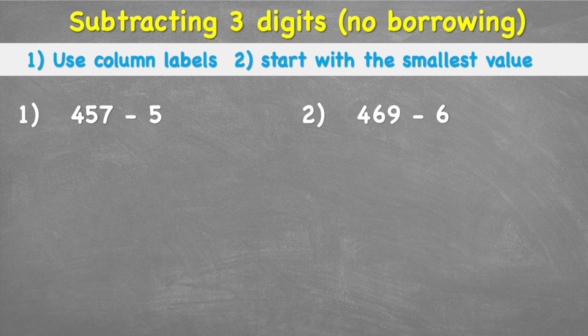So today we're going to be looking at subtraction. Let's look at our two steps. First, we're going to remember to use column labels. This is really important to help us not put things in the wrong place. Secondly, we're going to start from the smallest value and we're going to see what that means properly in a moment.